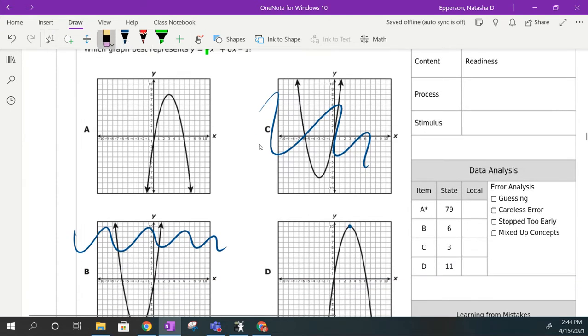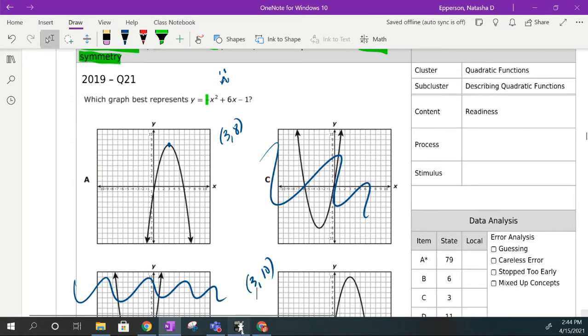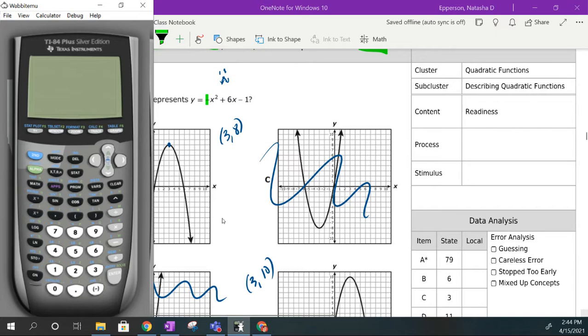Looking at the two results left, they have different vertexes. A has a vertex at 3, 8, and D has a vertex at 3, 10. So now, since I'm taking a test and I'm dealing with interest of time, I'm going to turn my calculator on. Let me go ahead and clear it from earlier calculations.